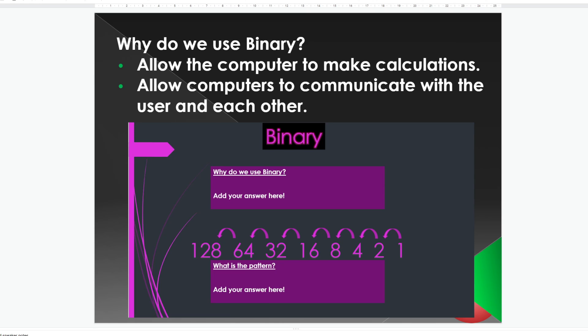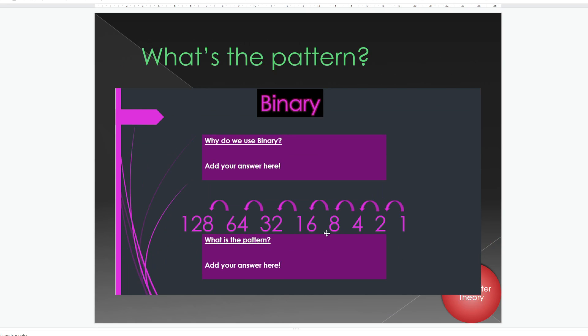So, it allows us to use computers to make calculations, run programs, so on and so forth. And it allows the computer to communicate with the user, such as ourselves, and each other, i.e. other software, other hardware, inputs, outputs, other computers, all sorts of technology. And the second question, what is the pattern?